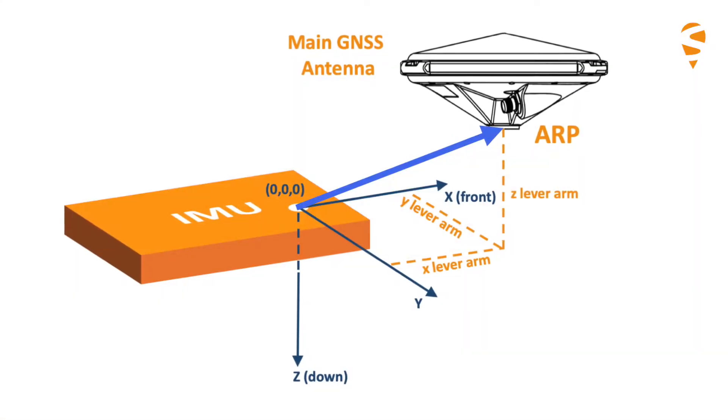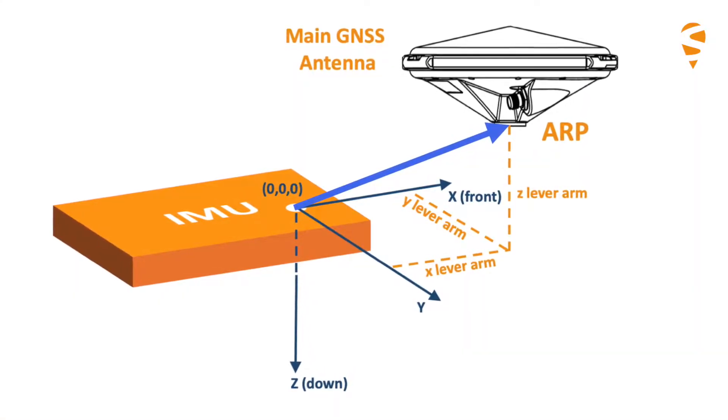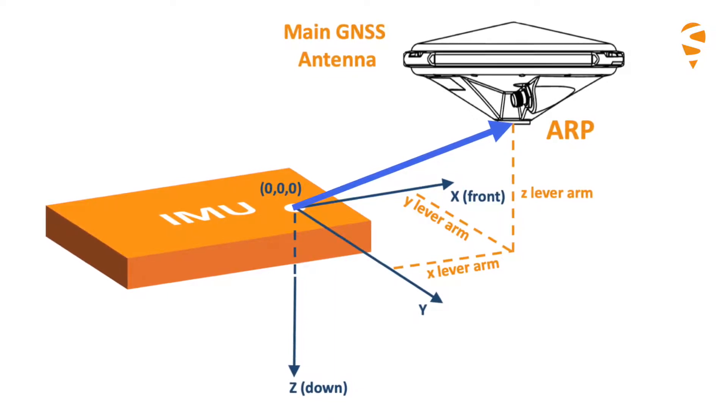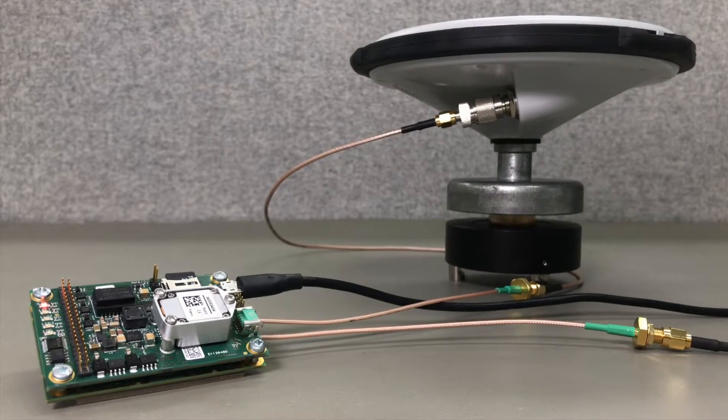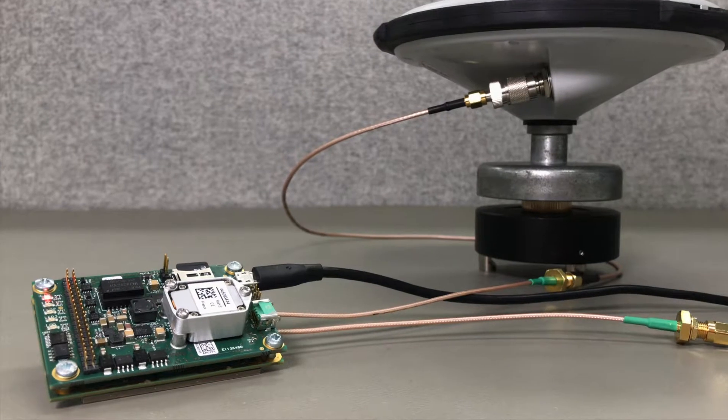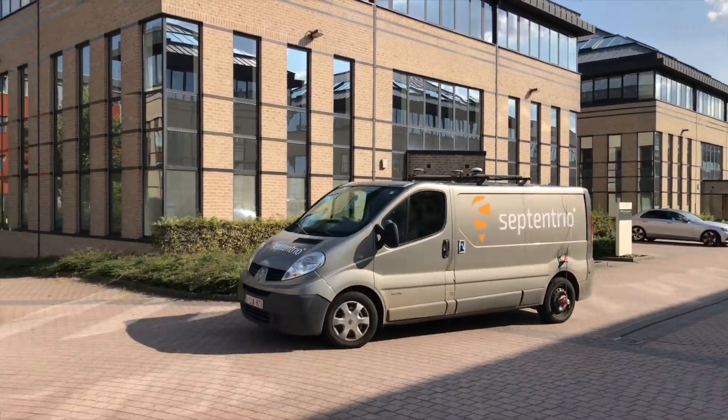For optimal INS GNSS integration, the effect of the lever arm must be compensated for. Lever arm offsets can occur in three dimensions and are always measured in the vehicle reference frame.